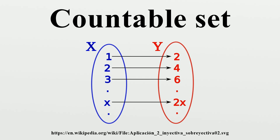The following theorem gives equivalent formulations in terms of a bijective or surjective function. Theorem: Let S be a set. The following statements are equivalent: S is countable, i.e., there exists an injective function F from S to N; either S is empty or there exists a surjective function G from N to S; either S is finite or there exists a bijection H from N to S. Corollary: Let S and T be sets. If the function F from S to T is injective and T is countable, then S is countable. If the function G from S to T is surjective and S is countable, then T is countable.